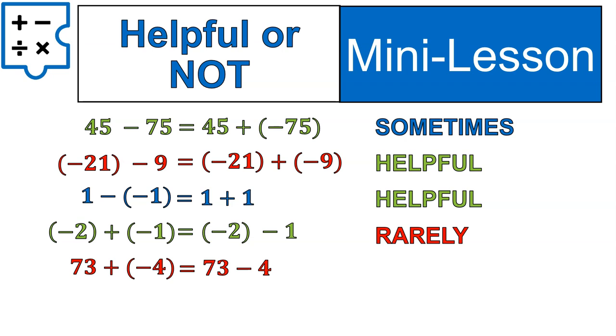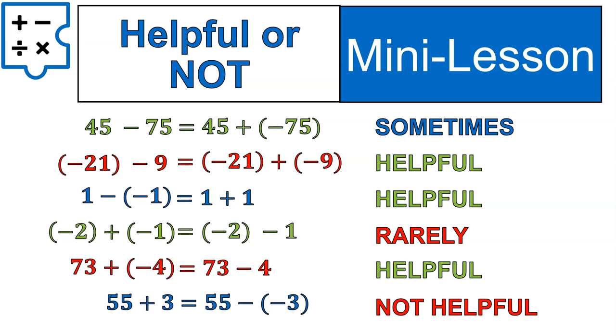Then we've got this one where we have 73 plus negative 4 and we change it to 73 minus 4. To me this looks helpful right? That one is simplifying my life and I like to simplify. Here's the final one where we have 55 plus 3 can be rewritten as 55 minus negative 3. That one I would say not helpful at all. Just not a situation that you would ever really do. It's just a thing that you can do because we can play around with math terms but it's not actually helpful.